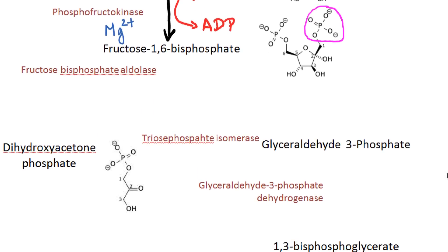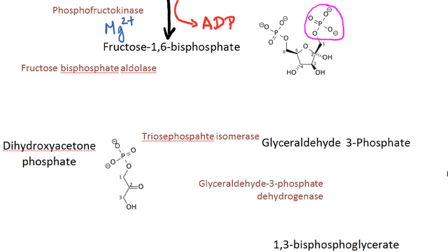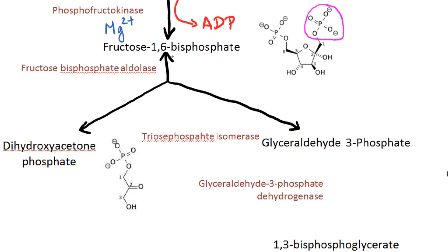The next reaction is going from fructose 1,6-bisphosphate to 2 different products. The first one is dihydroxyacetone phosphate and the second product is glyceraldehyde 3-phosphate. It is a reversible reaction which is carried out by fructose bisphosphate aldolase. The next step is to convert dihydroxyacetone phosphate to glyceraldehyde 3-phosphate, and this is a reversible reaction carried out by triose phosphate isomerase.